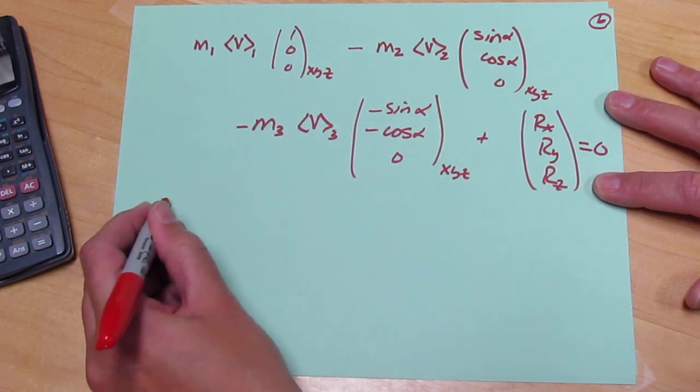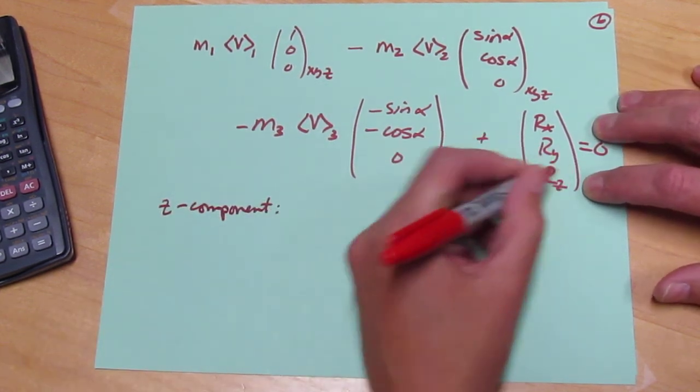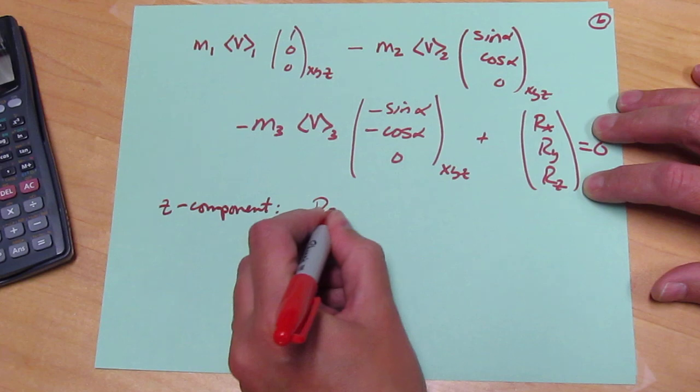So we can look at the Z component, and we see that RZ is 0.